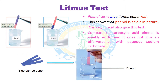The first test is the litmus test, which is used to determine the acidity or basicity of any compound. If blue litmus paper is dipped into an acid solution, it turns red. If red paper is dipped in a basic solution, the litmus paper turns blue. Phenol turns blue litmus paper red, showing that phenol is acidic in nature. Compared to carboxylic acids, phenol is weakly acidic and does not give an effervescence with aqueous sodium carbonate solution.